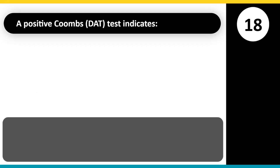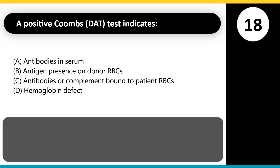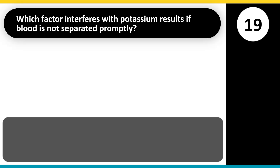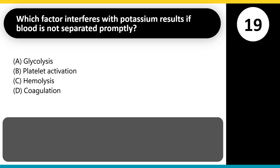A positive Coombs (DAT) test indicates: A. Antibodies in serum. B. Antigen presence on donor RBCs. C. Antibodies or complement bound to patient RBCs. D. Hemoglobin defect. Answer: C. The direct antiglobulin test detects antibodies or complement directly attached to RBC surfaces.